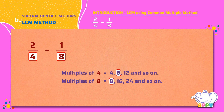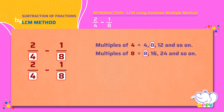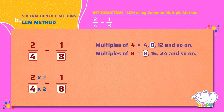So let's make the denominators the same as 8. We multiply the denominator of the first fraction with 2, that is 4 times 2 equals 8. Since we multiply the denominator, we multiply the numerator with the same number, that is 2 times 2. We get 4 by 8.